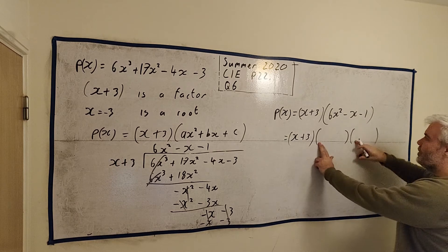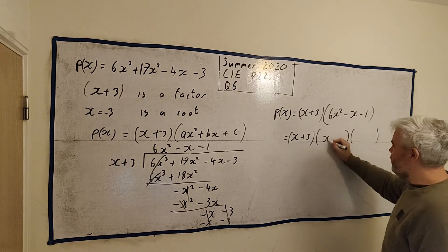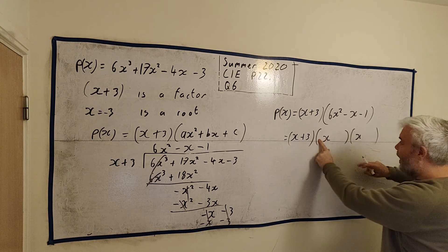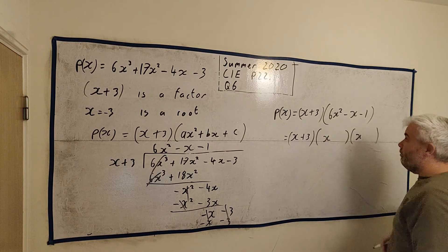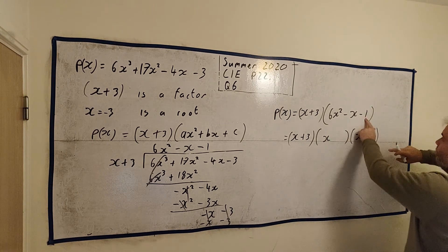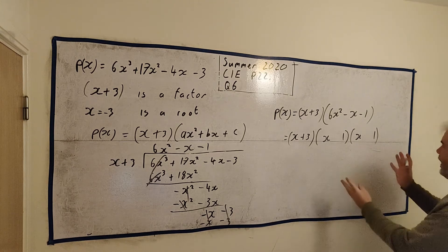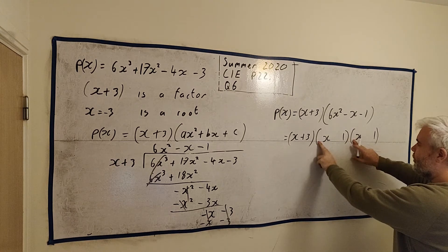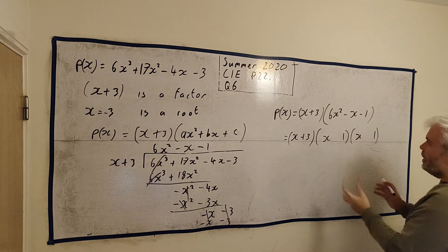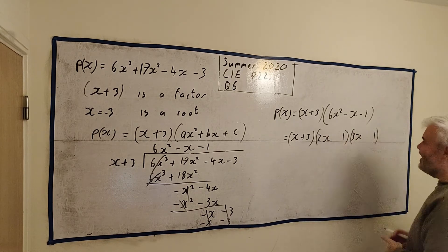We need two numbers to multiply to get 6x squared. That's difficult because there's a few choices there. It could be 6x and x. It could be 2x and 3x. Or 3x and 2x. Luckily, though, the 1 here. Because we need two numbers to multiply to get 1. Well, there's only 1 and 1. So can we make anything work? We need to fill in 6 and 1, 2 and 3, or 3 and 2.